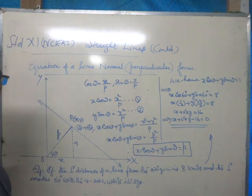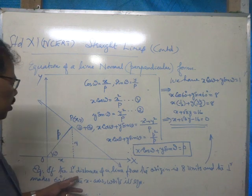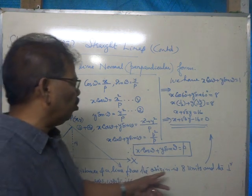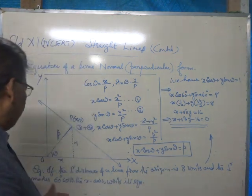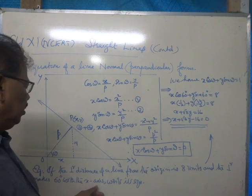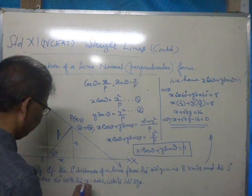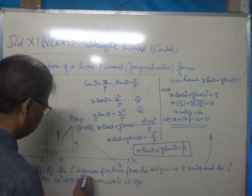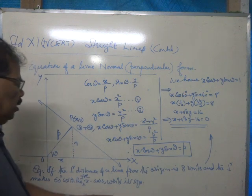Now, we shall consider an example. If the perpendicular distance of a line from the origin is eight units, and the perpendicular makes sixty degrees with the x-axis, with the positive x-axis, write its equation.